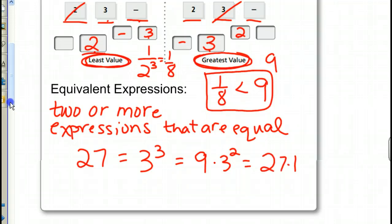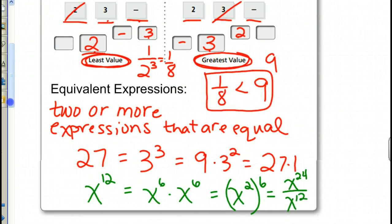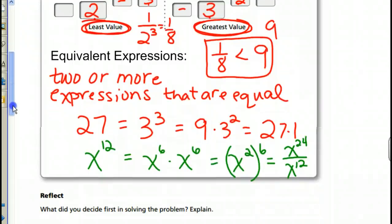But when we look at it in exponents, let's take x to the 12th power. x to the 12th power is equal to x to the 6th times x to the 6th. It's also equal to x to the 2nd and then that to the 6th. It's also equal to, if we take it one step further, x to the 24th over x to the 12th. So, it could be equal to a bunch of different things. We're just comparing different equivalent expressions.